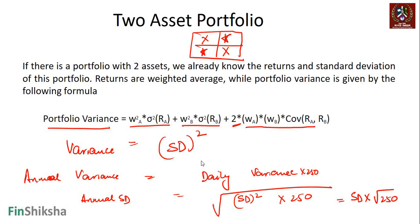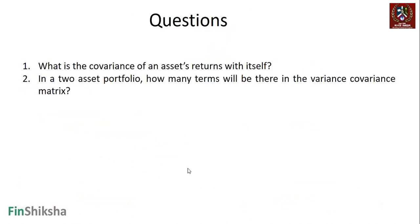That's what we do with a two-asset portfolio. In the next section, we're going to extend this to a three-asset portfolio. As we end this section, a couple of quick questions: What is the covariance of an asset's return with itself? And in a two-asset portfolio, how many terms will there be in the covariance matrix?